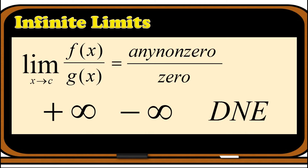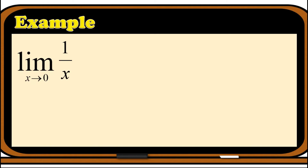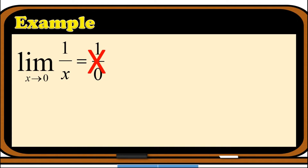To better understand this concept, let's say we are asked to find the limit of 1 over x as x approaches 0. If we use substitution, the limit of the numerator is 1 and the limit of the denominator is 0, giving us 1 over 0, which is undefined. However, applying the numerical method by constructing a table of values, we can actually solve for the limit. Let us list values approaching 0 from the left and from the right, then evaluate their corresponding f(x) values.